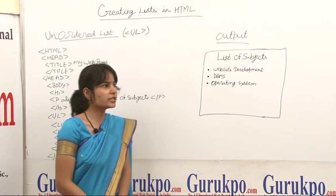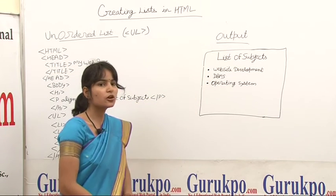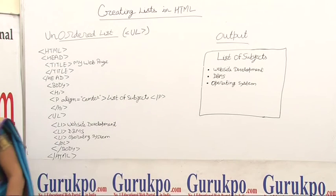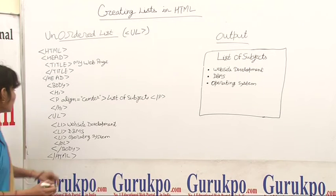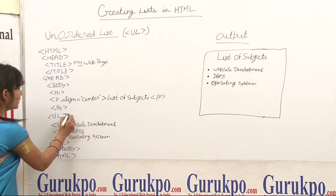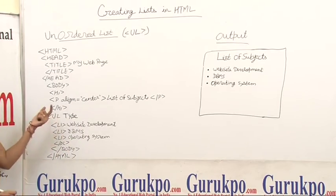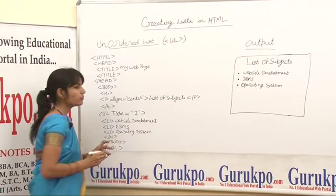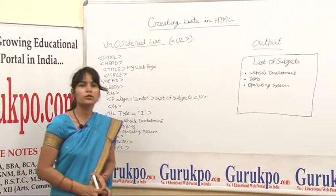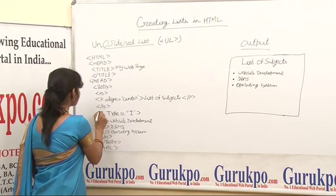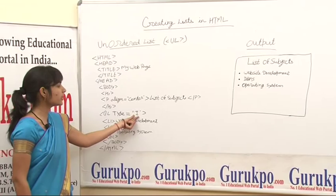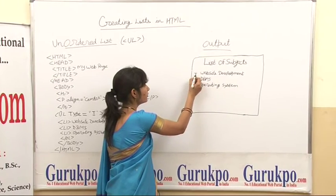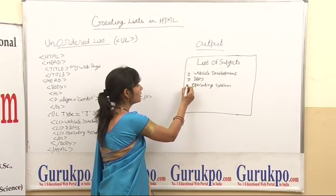We can also change the type of bullets or the type of numbers using the type attribute of the UL tag or OL tag. If we use the type attribute in the UL tag or OL tag, then we can specify the type of list we want to display. For example, if we use the OL tag and specify the type attribute as 'I', then the output will change to display items as first, second, and third in Roman numerals.